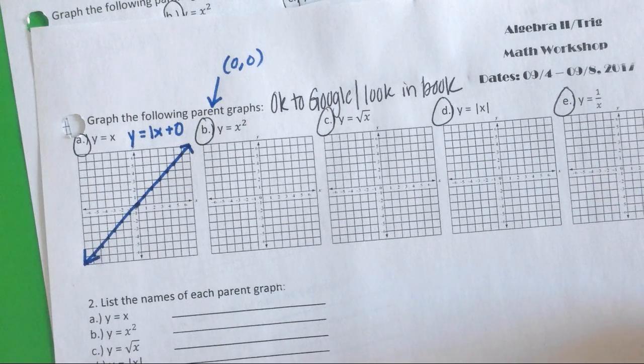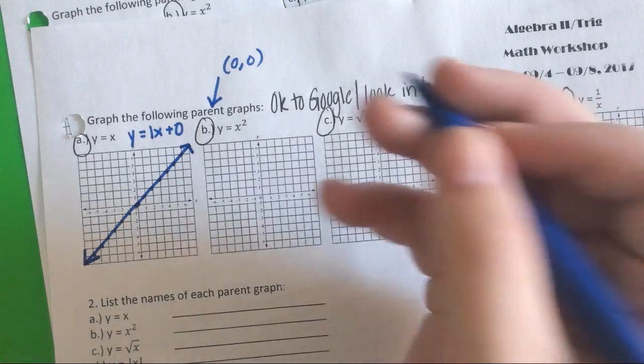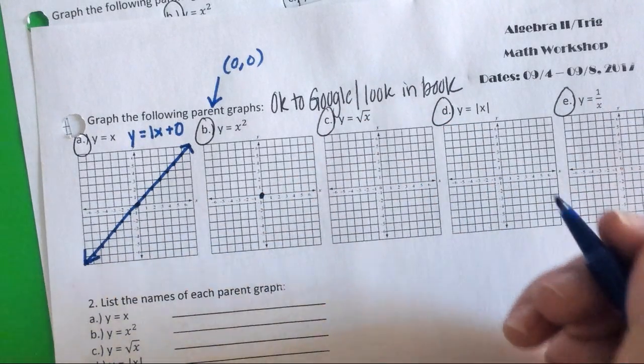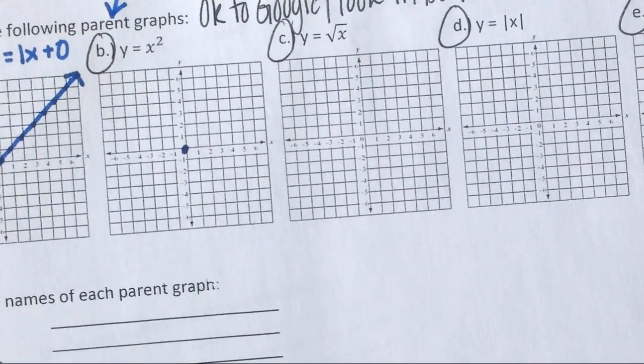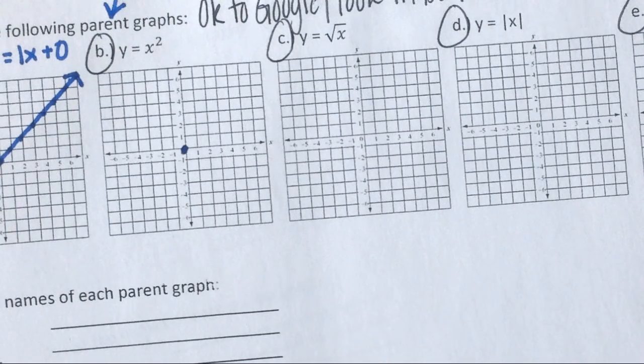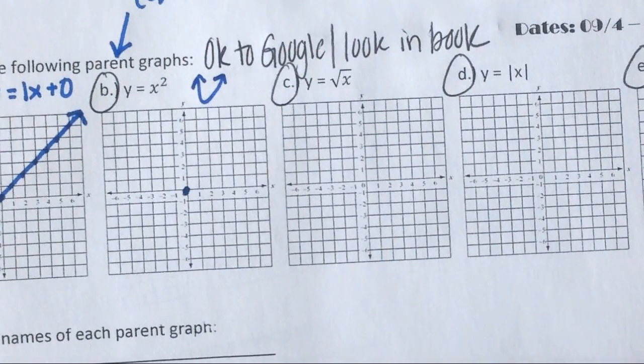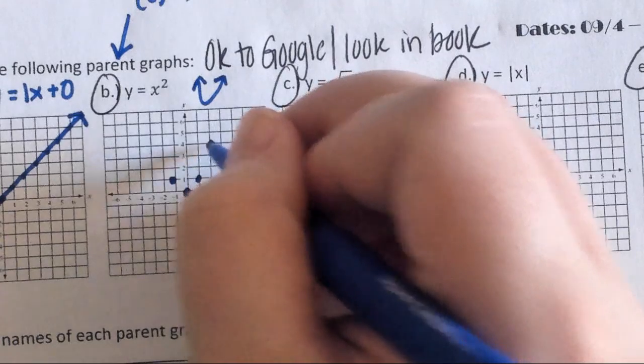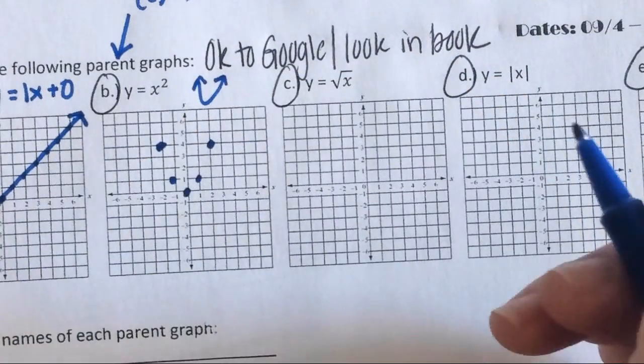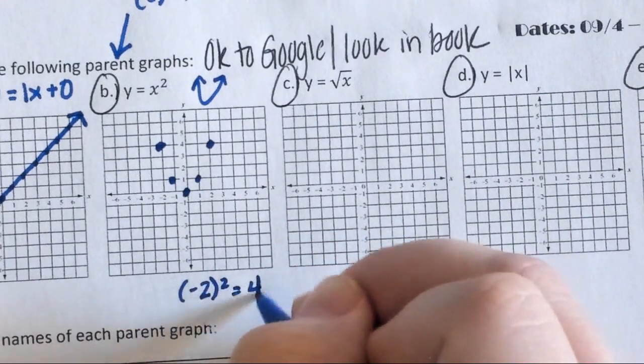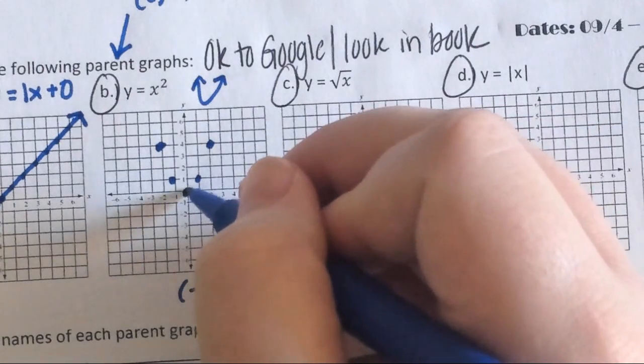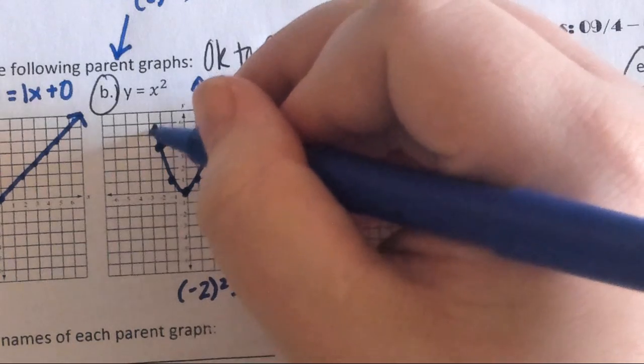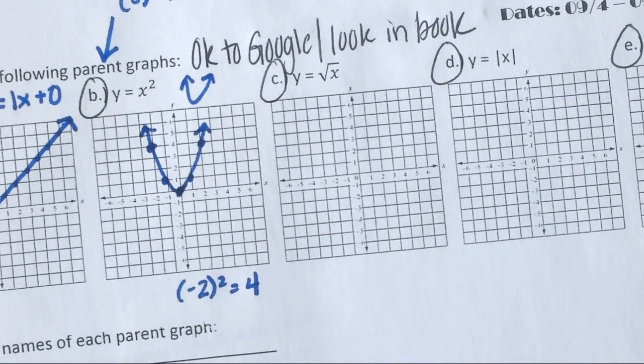Did someone have time to Google y equals x squared? So y equals x squared is a parabola. Does anyone know what letter of the alphabet a parabola looks like? It is a u. So we're going to make a u. We're going to go through 1, 1 and negative 1, 1. We're going to go through 2, 4 and negative 2, 4. If Alondi were to ask me why, I would remind him that negative 2 squared is positive 4, the same way that positive 2 squared is positive 4. So we end up with a u shape.